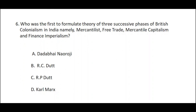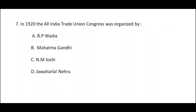Question number six: Who was the first to formulate the theory of three successive phases of British colonialism in India — namely mercantilist, free trade mercantile capitalism, and finance imperialism? Option A: Dadabhai Naoroji, option B: RC Dutt, option C: RP Dutt, option D: Karl Marx. The correct answer is option D — Karl Marx.